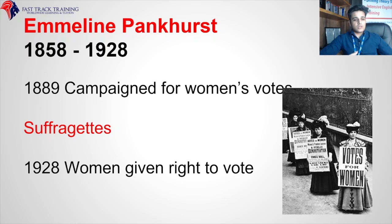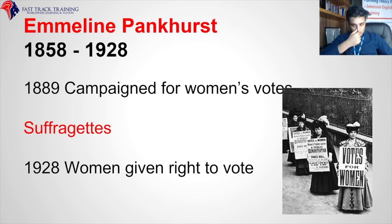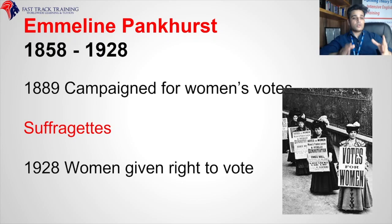The suffragettes were looked at as troublemakers — they were the women who suffered for their rights. In 1928, women were given the right to vote, directly after World War I. Key exam questions: Who are the suffragettes? Women who campaigned for women's rights to vote. Who was the leader of the suffragettes? Emmeline Pankhurst. When did women get the vote? 1928.